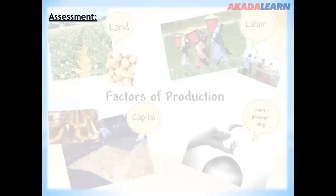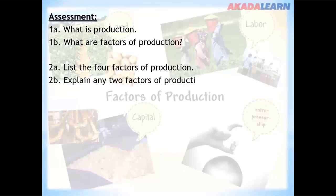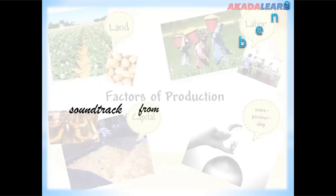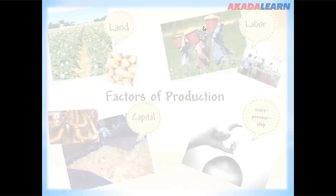Assessment questions: (1a) What is production? (1b) What are factors of production? (2a) List four factors of production. (2b) Explain any two factors from your list. (3) List four features and the importance of the following factors: land, labor, and management. If you find it difficult to answer these questions, go over the video again and it will be simple and easy. Thank you for being on this platform.